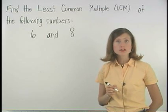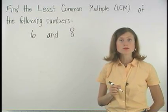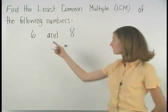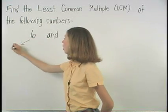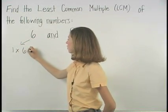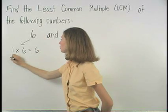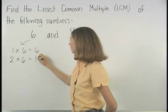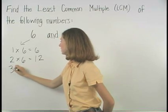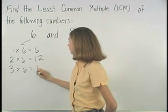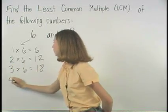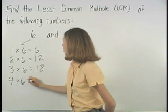begin by listing the first few multiples of each number. The multiples of 6 that we list are 1 times 6, or 6, 2 times 6, or 12, 3 times 6, or 18, and 4 times 6, or 24.